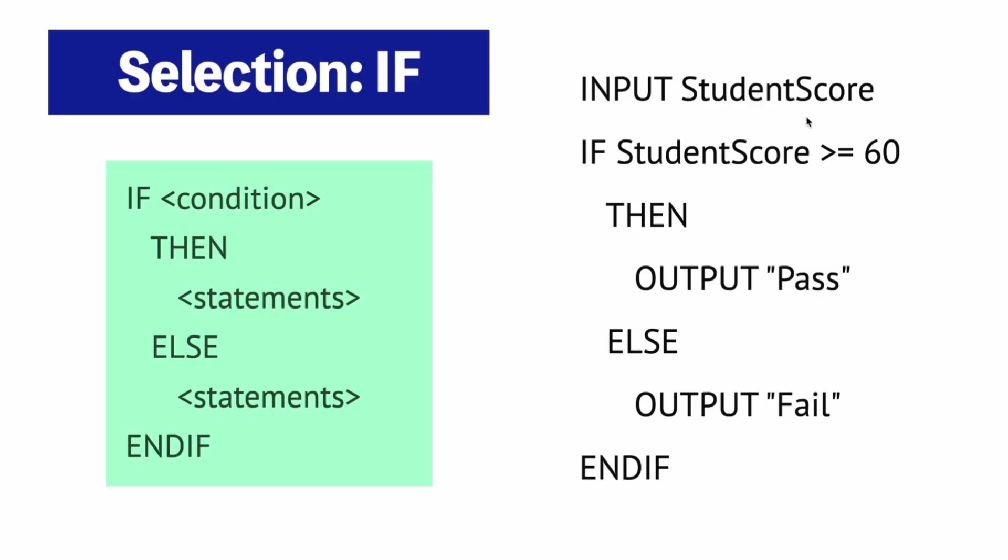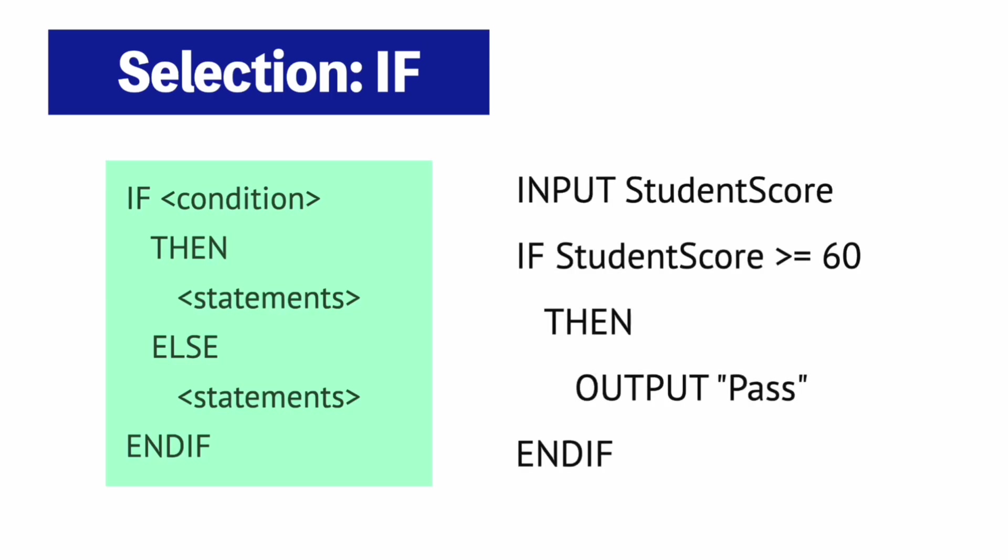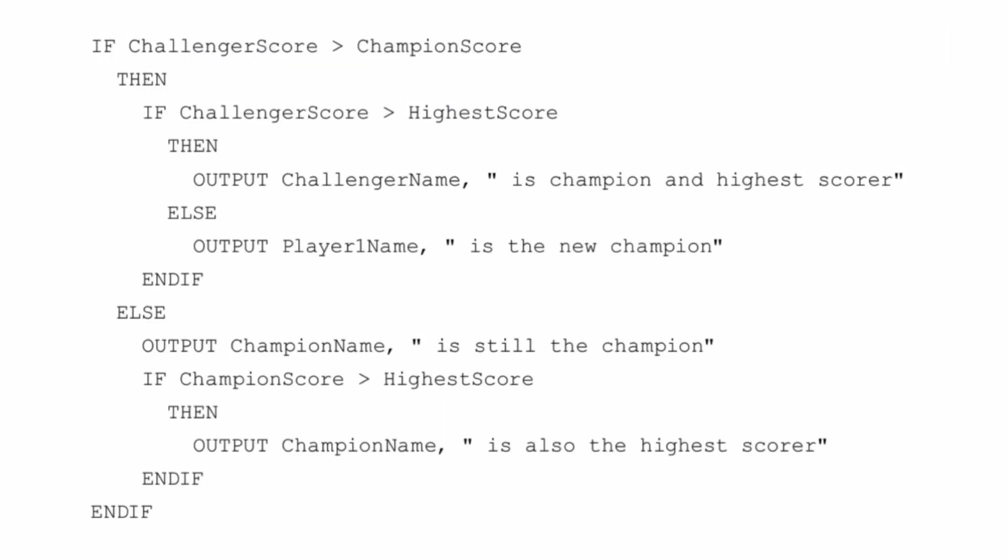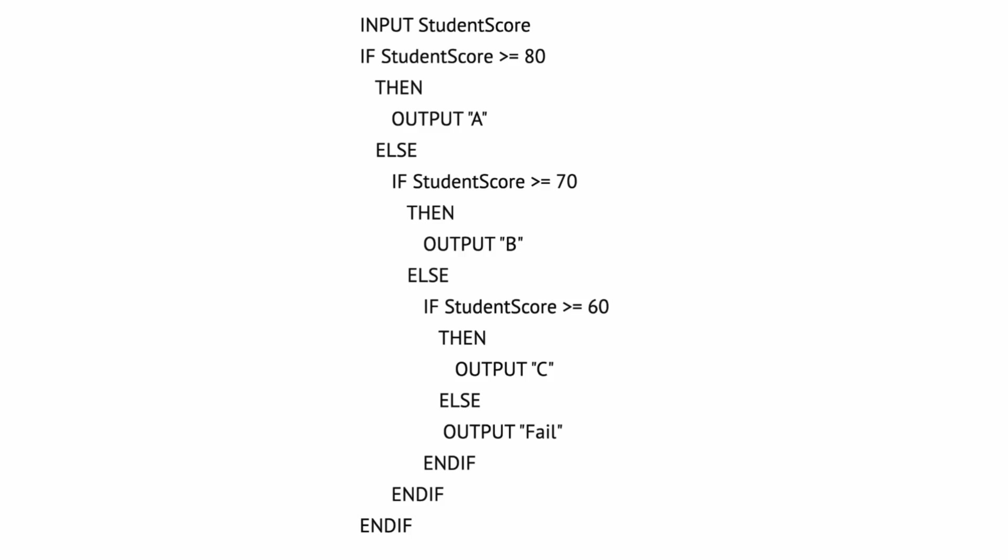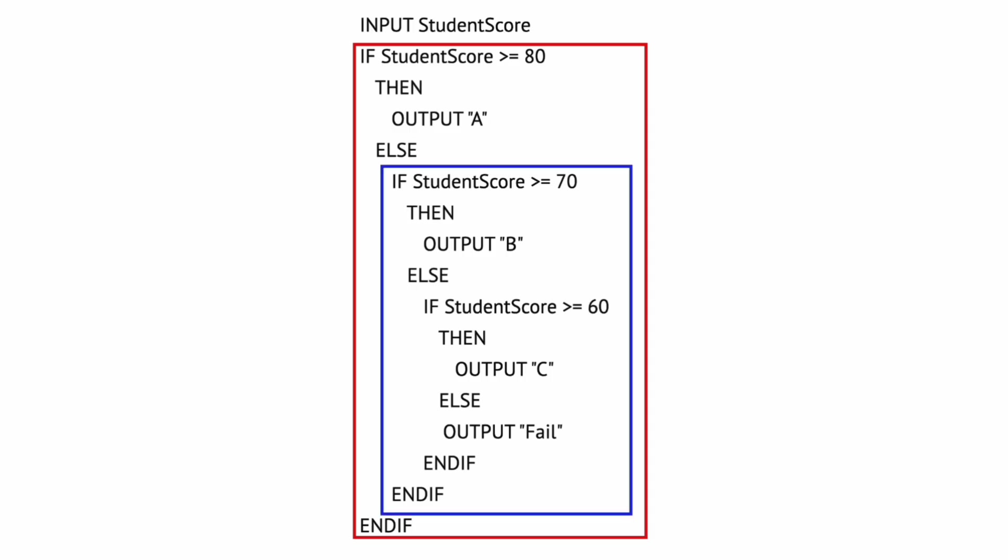However if the student did not meet this condition, so they got below 60, we will have to move to the ELSE clause and the program will output the word fail. An IF statement does not always have an ELSE clause by the way. If there's no need for an ELSE clause you can just omit the ELSE keyword altogether and just close with an ENDIF. Another thing to note is that you are allowed to put IF statements inside of other IF statements. These are called nested IF statements. For example, maybe the program from earlier has to be amended so that scoring 80 and above outputs an A and then scoring 70 and above outputs a B and so on.